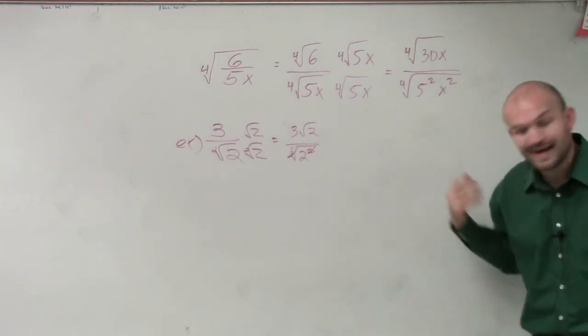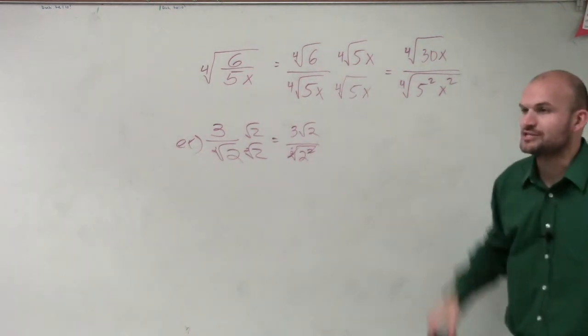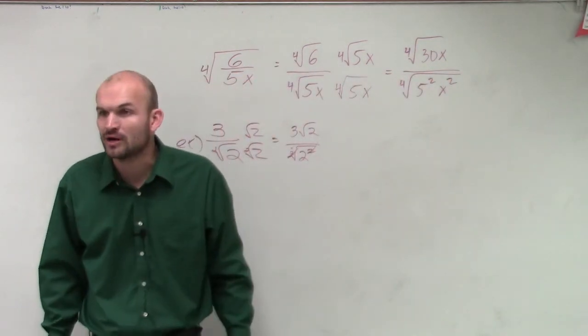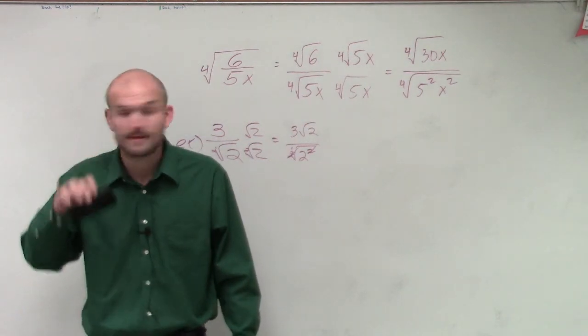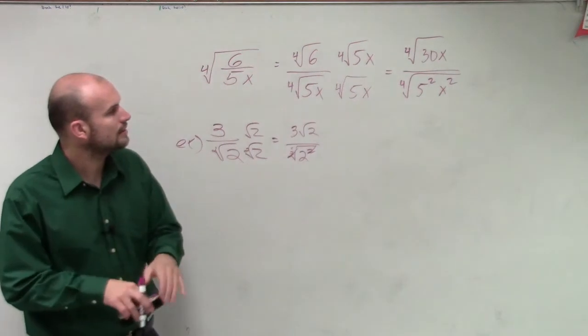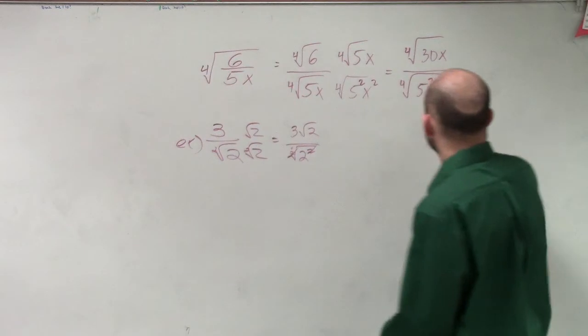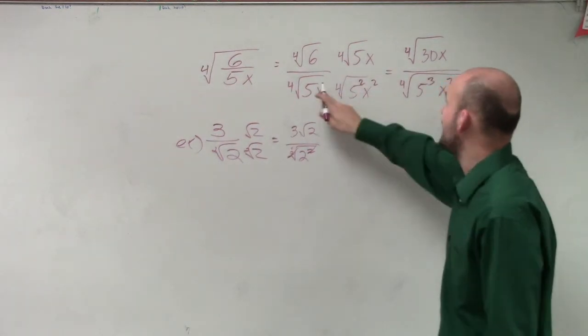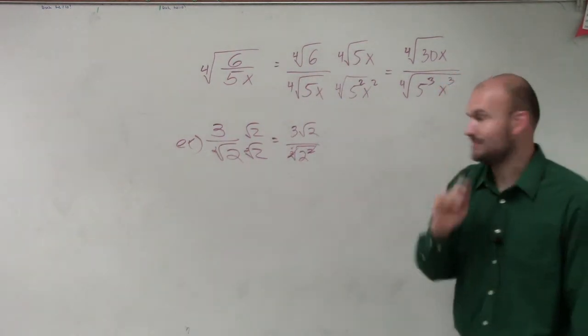So what power do I need to get this to be? Four. I need to get them to be the fourth power. So rather than multiplying it just by 5x, do you guys have maybe another number or what could I raise 5x to a power of that would get me to the fourth? 5 squared x squared? Well, if I did 5 squared and x squared, then 5 times 5 squared is 5 cubed, x times x squared is going to be x cubed.